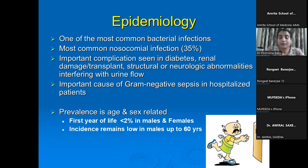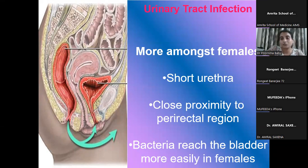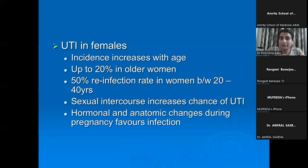In the first year of life, the incidence is pretty low in males and females. This incidence remains low in males up to 60 years, but after that it increases. In females, UTI is more common because females have a shorter urethra and there is close proximity to the perirectal region — this leads to easy contamination and bacteria can ascend into the urinary bladder more easily. UTI in females increases with age, going up to 20% in older women, with a chance of reinfection. Sexual intercourse and pregnancy also increase the chance of acquiring UTI in women.